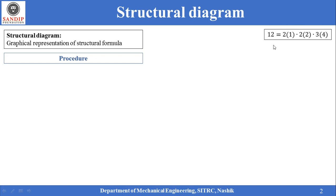The general form of structural formula is z equal to p1(x1), p2(x2), p3(x3) and so on. Thus we have the first structural formula as 12 = 2(1) × 2(2) × 3(4). Where 12 is equal to z, that is total number of speed steps in the gear box. 2 is p1, 1 is x1, 2 is p2, 2 in the bracket is x2, 3 is p3 and 4 is x3.